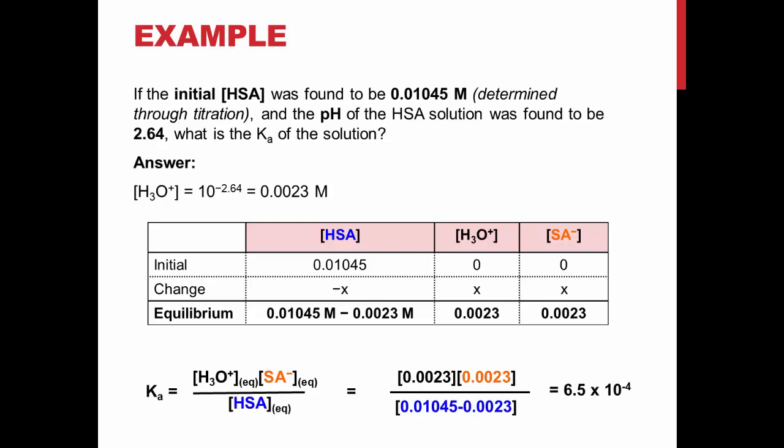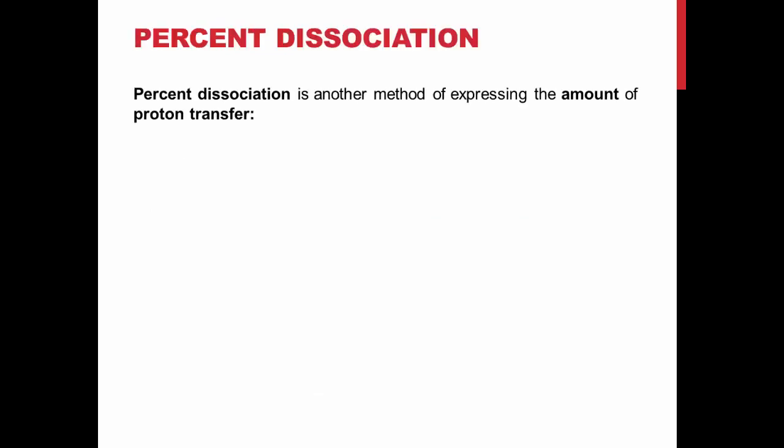The percent dissociation is another way to express the degree to which an acid dissociates. It is found by dividing the equilibrium concentration of hydronium ions by the initial salicylic acid concentration and multiplying by 100.